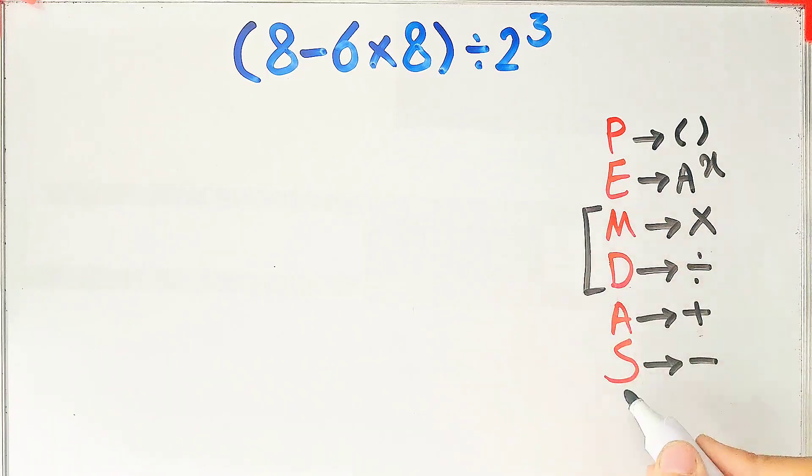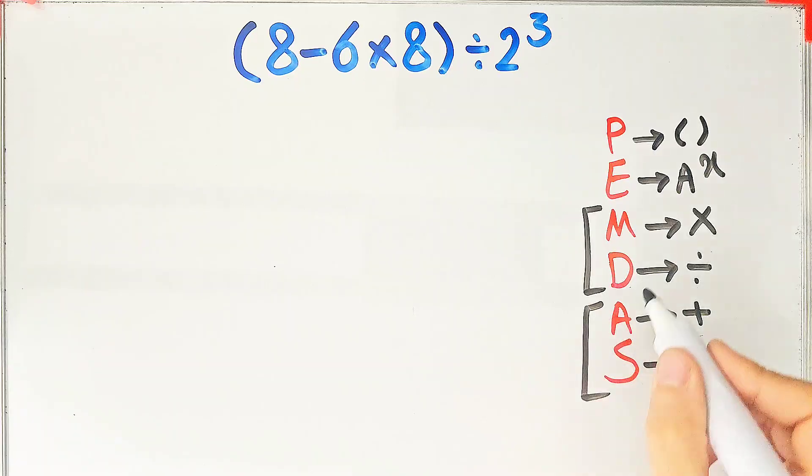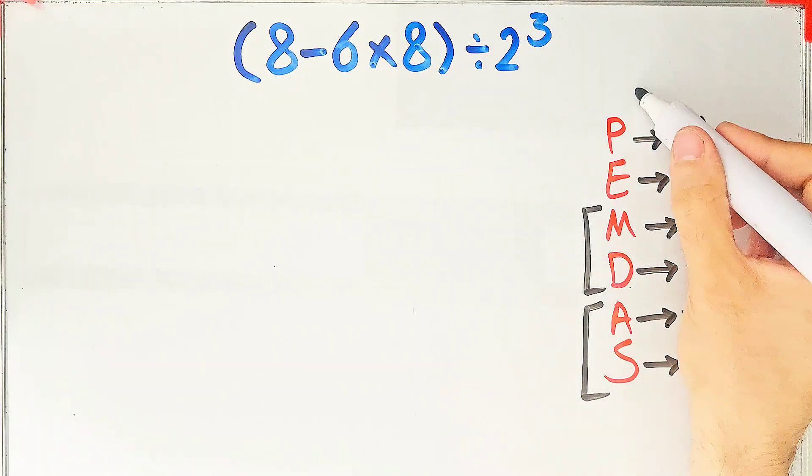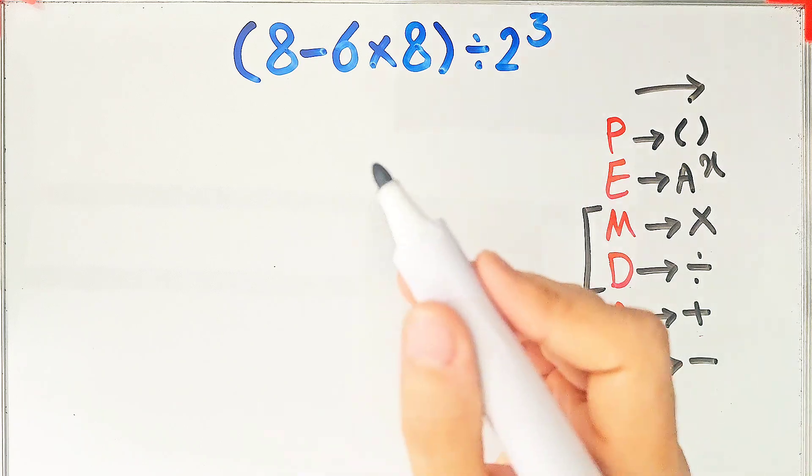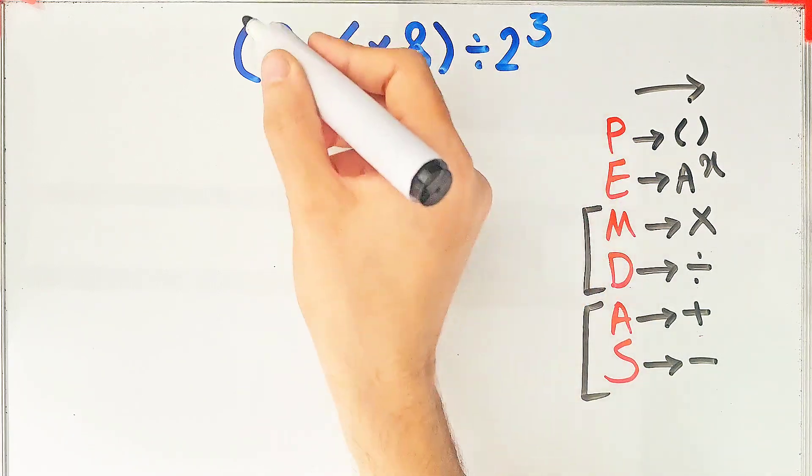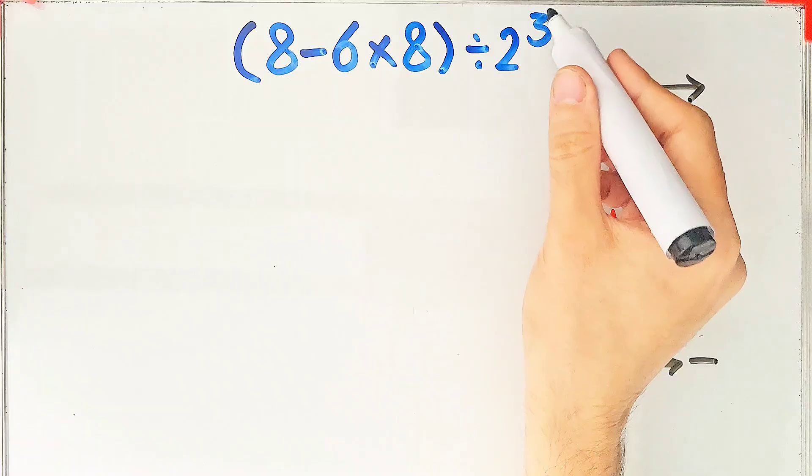Multiplication and division have the same level of priority, also addition and subtraction have the same priority. When we have both in an expression, we start from the left and simplify. In this question, we have subtraction, multiplication, parentheses, division, and exponent.